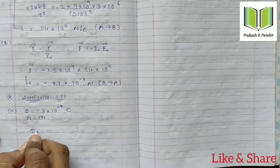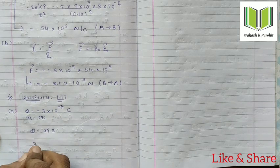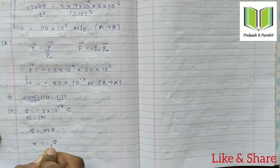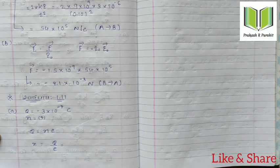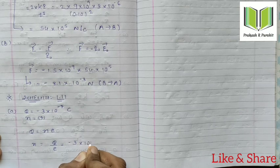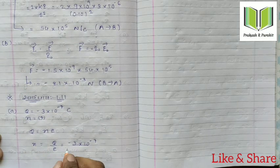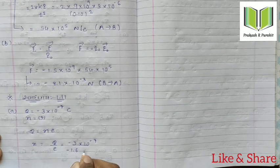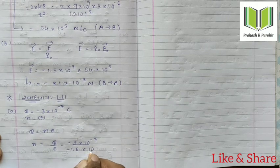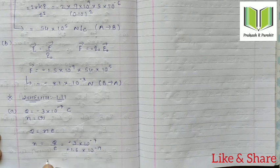n into e — n is electron and n is equal to e. q is equal to e, q is equal to e minus 3 times 10 to the minus 7. Electron charge is equal to minus.